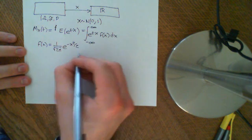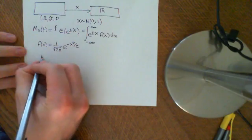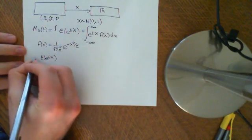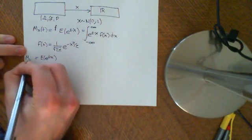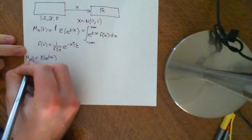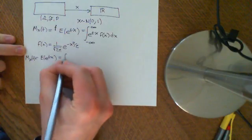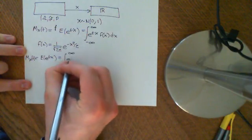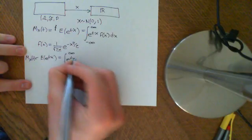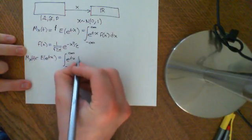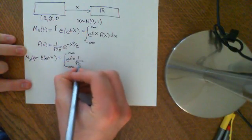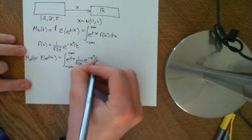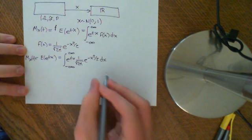The PDF of the standard normal distribution is 1 over the square root of 2π times e to the negative x squared over 2. Substituting that in, the moment generating function of X equals the integral from negative infinity to infinity of e to the tx times 1 over the square root of 2π times e to the negative x squared over 2 dx.